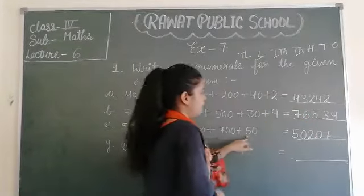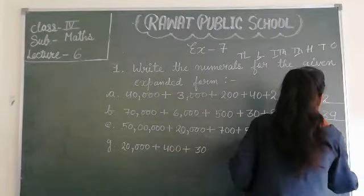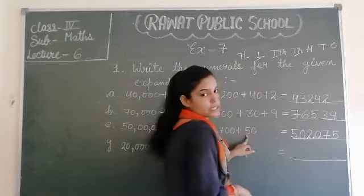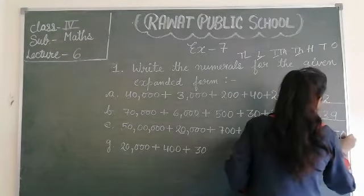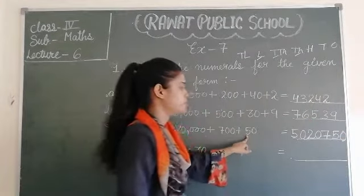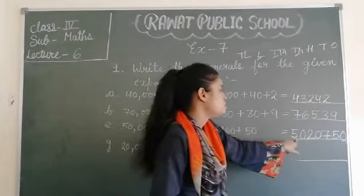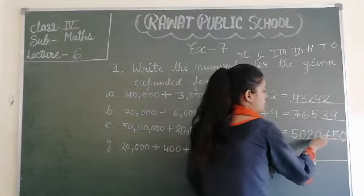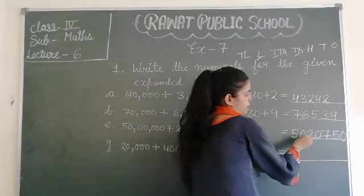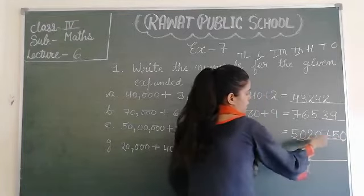Then iske baad ten thousand ki digit se before kaun sa aati hai place? One thousand wali. One thousand wali digit nahi hai, direct hundred wali aa rahi hai, toh iska bhi hum zero laga denge. Phir iske baad hundred aata hai, toh hundred ki digit, toh iska hum sirf seven likhenge. Then iske baad fifty, toh fifty kya ho gaya, tens wali digit hai. So ab isko read karte hain. Fifty lakh twenty thousand seven hundred fifty.